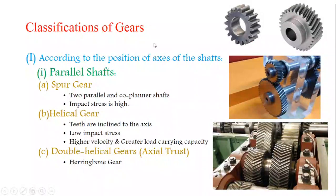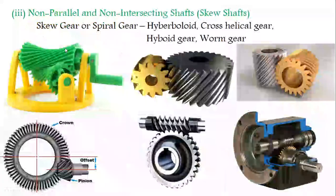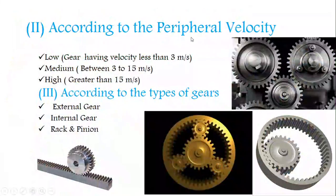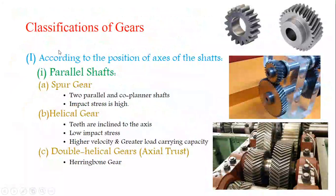Classification of gears: gears are classified in four major categories. One is according to the position of axis of the shaft; second is according to the peripheral velocity; third is according to the types of gears; and fourth is according to the position of teeth on the gear.